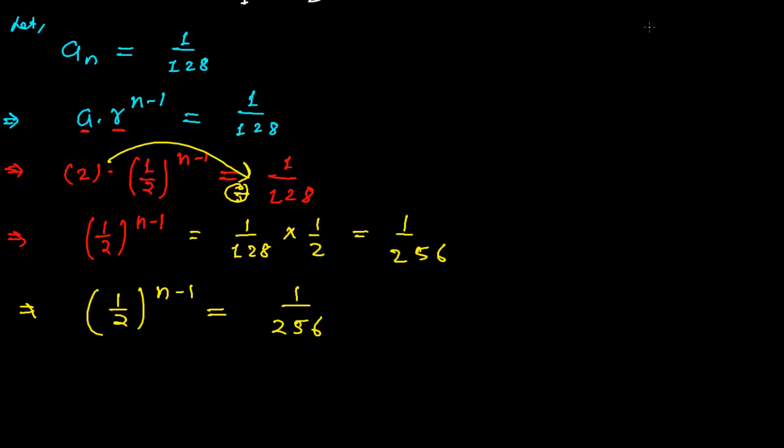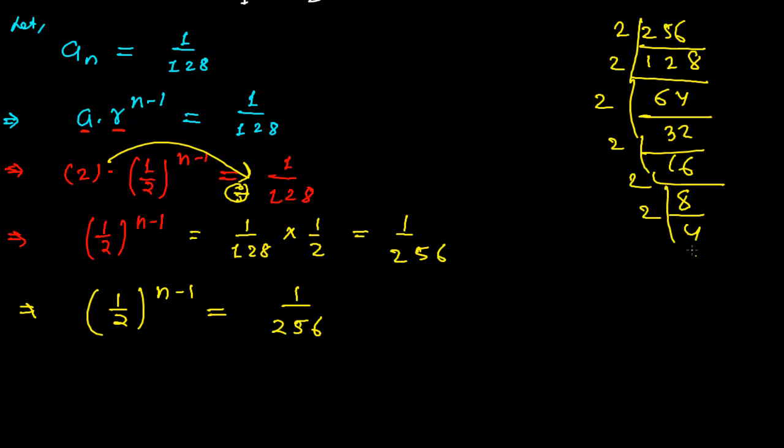Now let's see, this is 256. Let me do the prime factorization: 2 times 128, then 2 times 64, 2 times 32, 2 times 16, 2 times 8. So what I get here: 1, 2, 3, 4, 5, 6, 7, 8—it means it is 1 over 2^8.